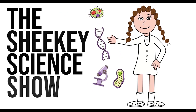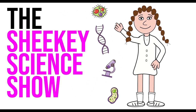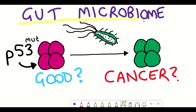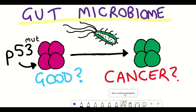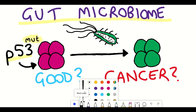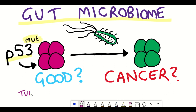Hello and welcome to the Shiki Science Show, where in this video we're going to talk about the gut microbiome and whether it can influence the functional outcome of cancer mutations. Specifically, we're going to talk about this recent Nature publication: 'The gut microbiome switches mutant p53 from tumour suppressive to oncogenic.' We'll begin by talking about p53, what mutant p53 means, and what the terms tumour suppressive and oncogenic actually mean.